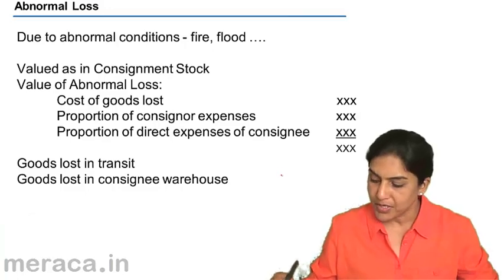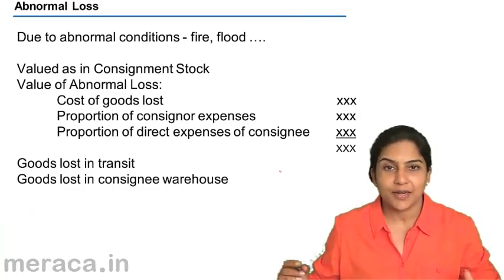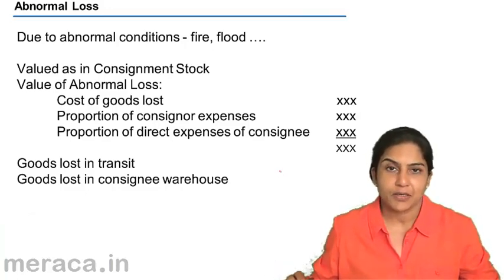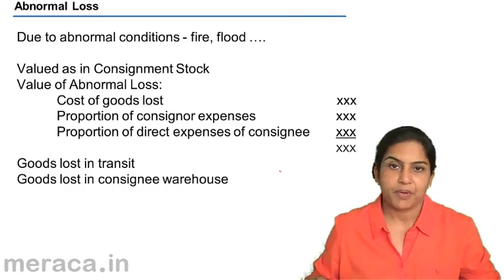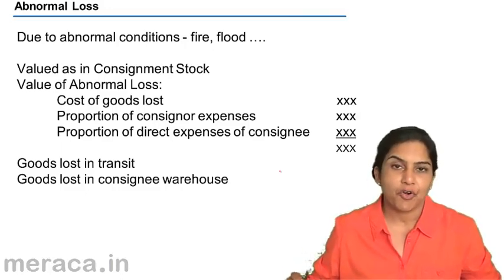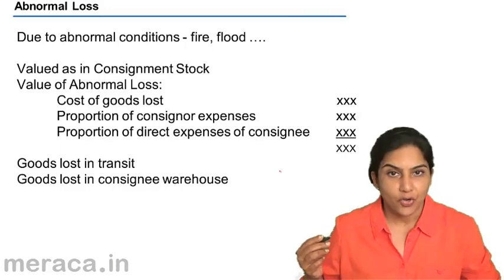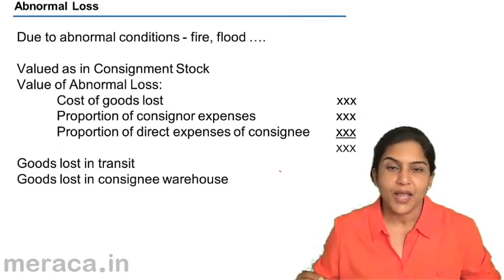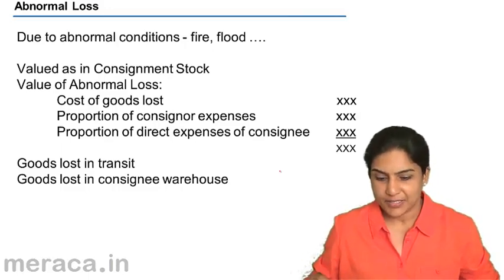What is abnormal loss? Abnormal loss is a loss which has taken place due to some abnormal conditions, like maybe fire, flood, theft, fraud, etc. It is not normal, it is not usual, and may occur because of some unexpected event.